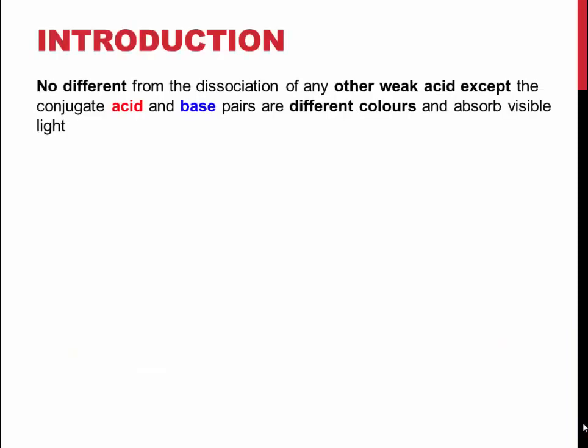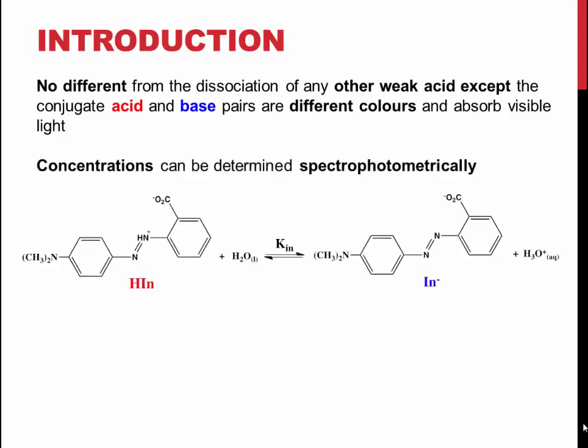Indicator solutions are essentially weak acids that have a conjugate acid-base pair that absorb different colors of light. The two forms of the molecule are in an equilibrium that can be pushed towards products or reactants by changing the pH of the solution.